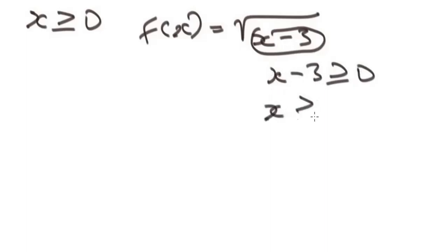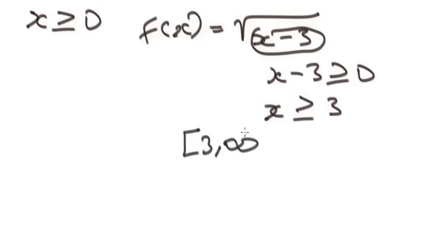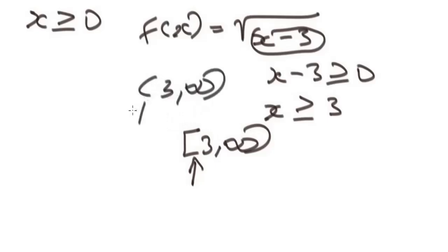Solving gives x greater than or equal to 3. To represent this domain in interval notation, we get numbers from 3 to positive infinity — [3, ∞). Note that we use a bracket when a number is included, but we use parentheses when a number is not included.